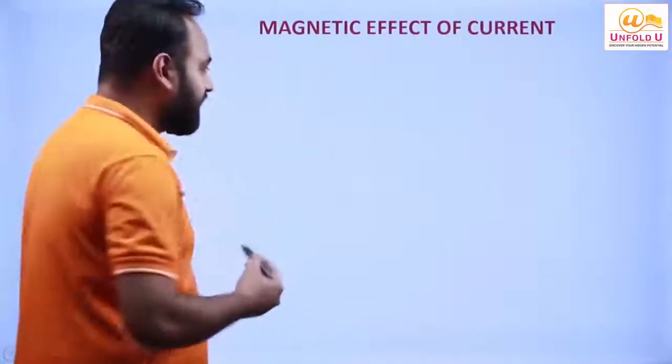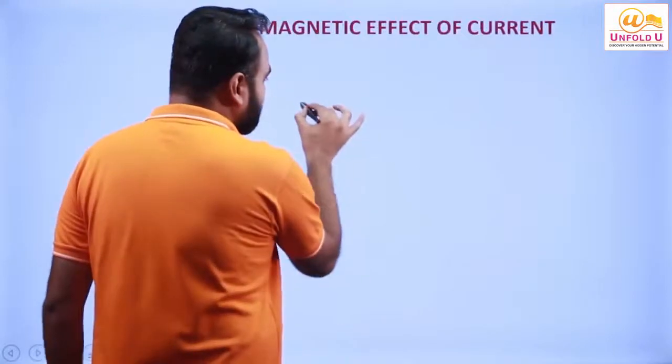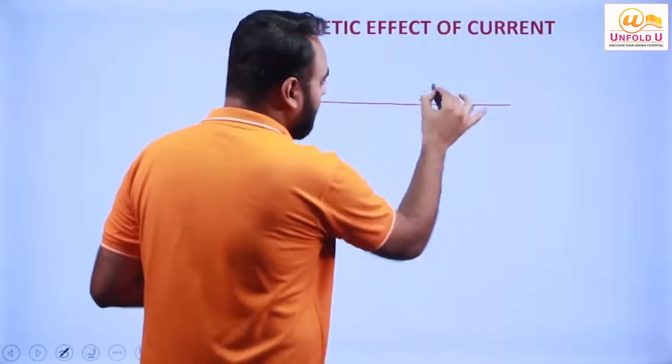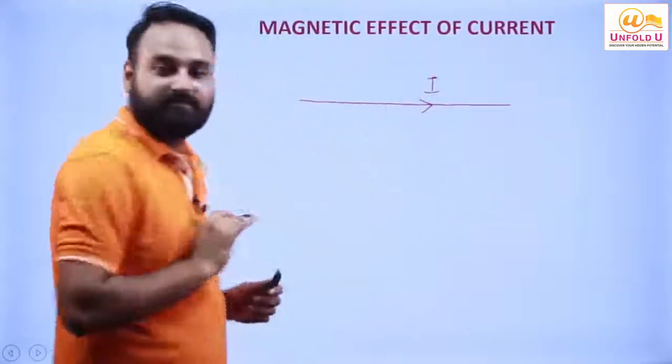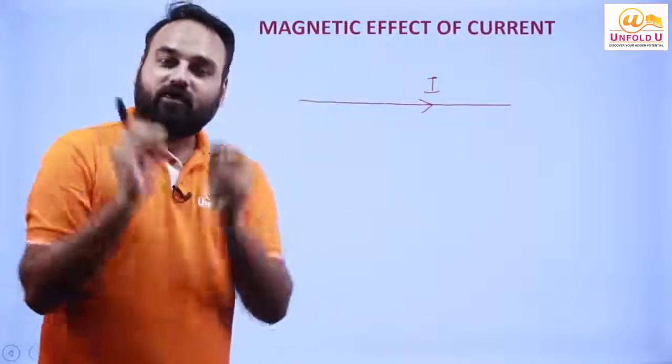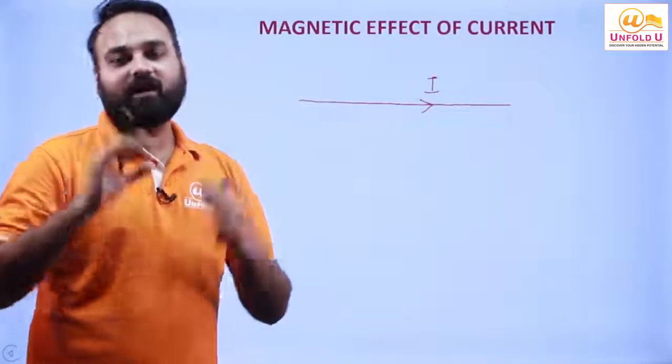Look at this. Understand, I have a wire. And in this wire, there is a current flow in this direction, I. Then, this current carrying wire will for sure produce a magnetic field around itself.